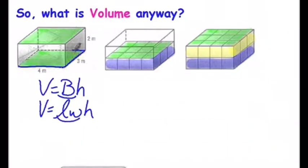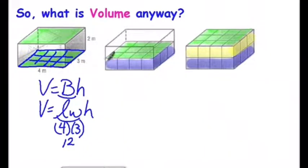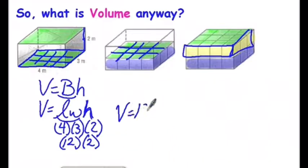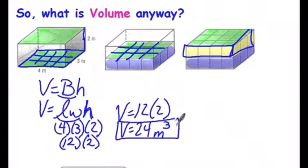In this case, we start with a formula V equals Bh, and replace B, the area of the base, with length times width. Our length times width here is 12. That means 12 cubes to cover the base. And then we multiply by the height, so two sets of 12. So our volume in this case is volume equals 12 times 2 layers gives us 24 cubic units.